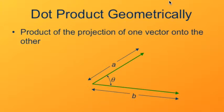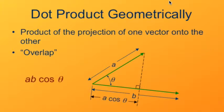Here if we drop a perpendicular from vector a down to vector b, then the length of that projection is a cosine theta. You multiply that by b, you get the dot product ab cosine theta.